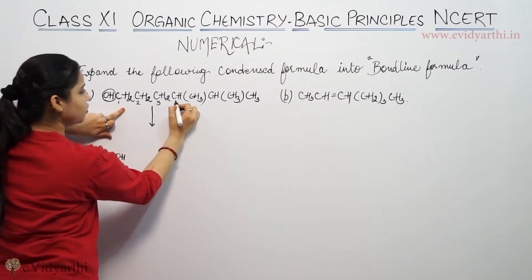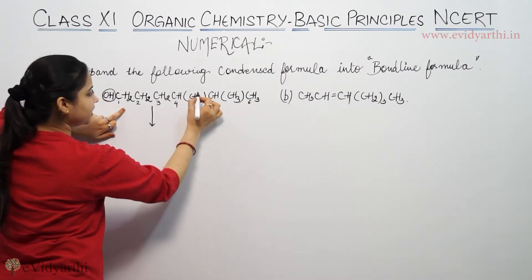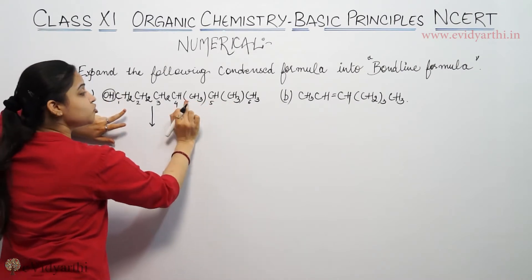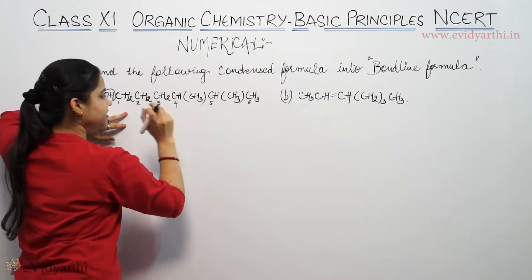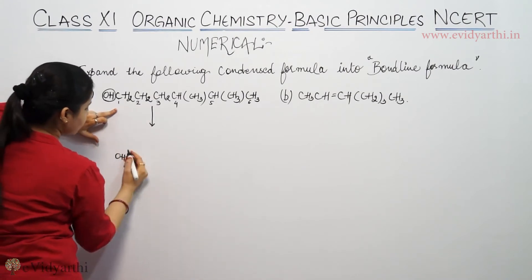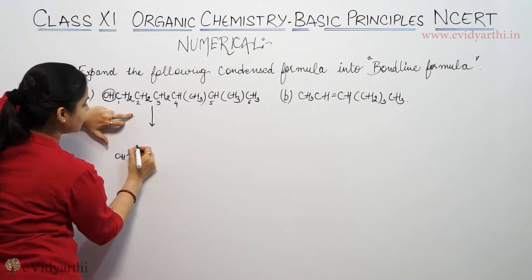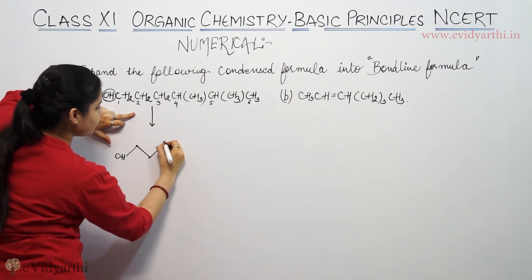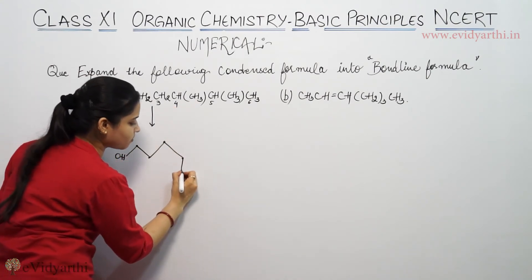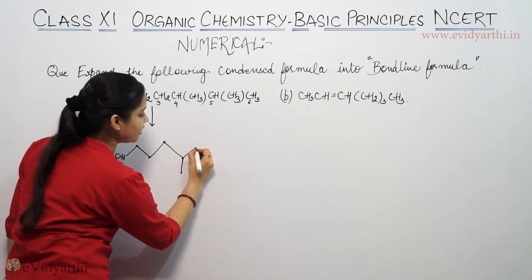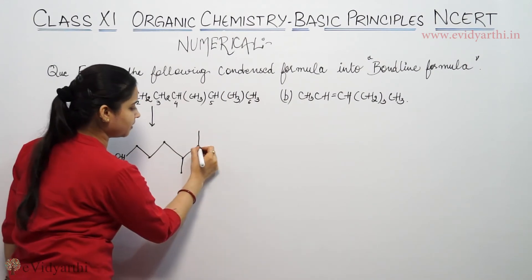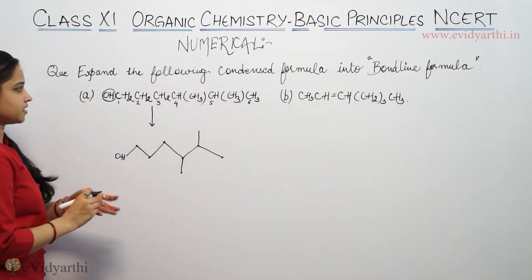1 carbon, 2, 3, 4, 5, and 6. The groups I have written in brackets are called methyl groups. I have marked these as substituents. OH is attached to carbon number 1. Carbon number 2, carbon number 3, carbon number 4 — our methyl groups are attached here. Carbon number 5 — our methyl groups are attached here as well. And carbon number 6.